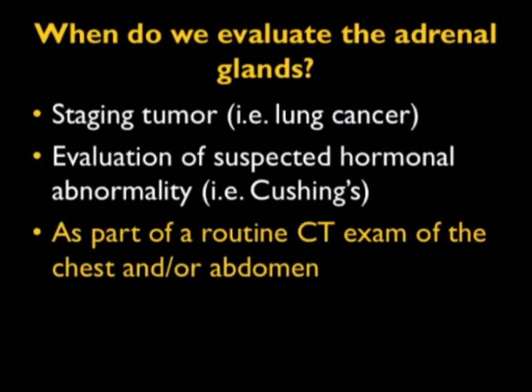The adrenal gland is something we scan in almost every patient. It may not be intentional — we may simply be scanning the chest and get some of the adrenal, or we scan the abdomen and we always get the adrenal. We can do specific adrenal studies, perhaps staging lung cancer to look for metastasis, or a patient with hormonal abnormality like Cushing's who we're looking for an adrenal mass.